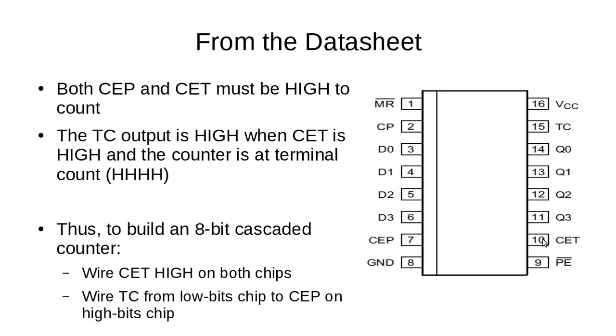With both of those high and not resetting or loading the chip, every time we get a clock pulse the chip's values will go 0, 1, 2, 3, 4, 5, 6, 7, 8, 9, 10. Which is all fine and good if you want a 4-bit counter, but we need an 8-bit counter so we need to cascade two chips together.